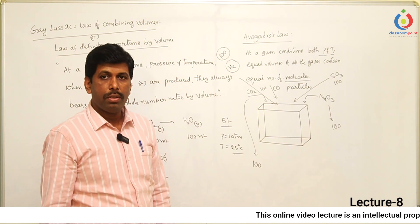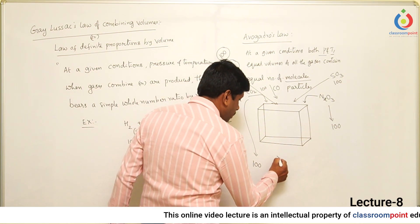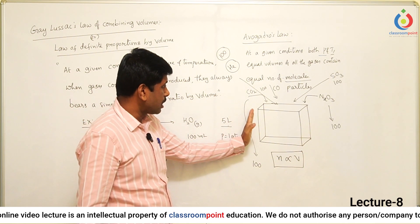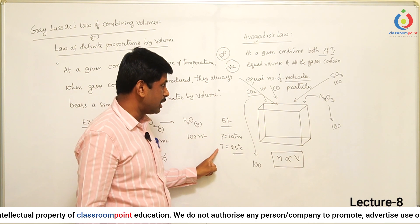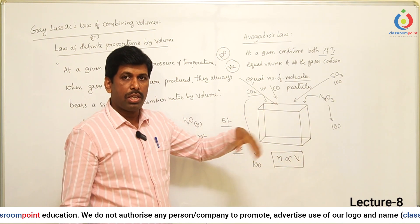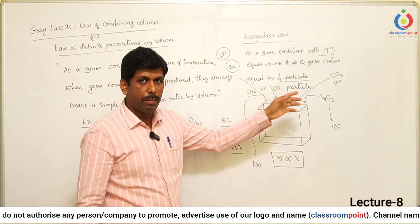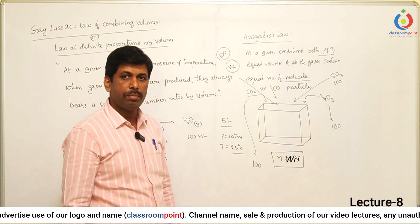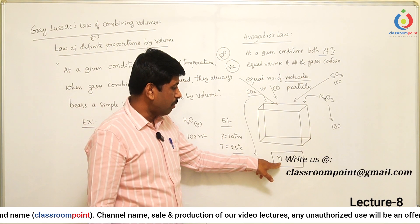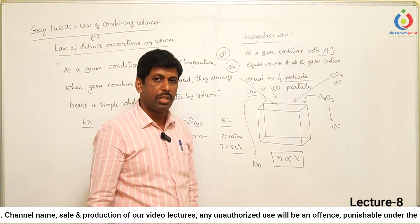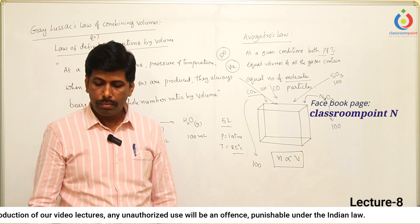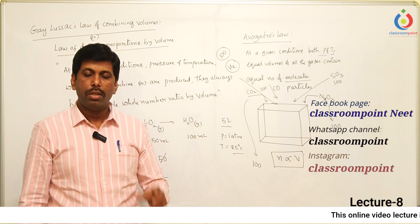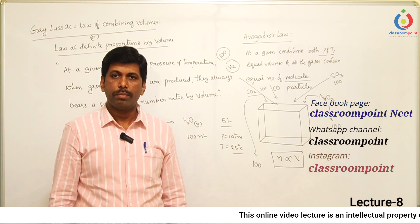That is what we call Avogadro's law. According to this, the number of molecules is directly proportional to volume. If you change the 5-litre container to a 10-litre container while maintaining the same conditions, it will contain double the number of molecules. So the number of molecules or moles is directly proportional to the volume of the container. I hope you understand this video. If you have any doubts, please send them to classroom.addir@gmail.com. Thank you all.